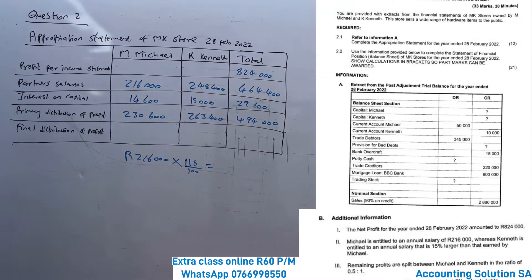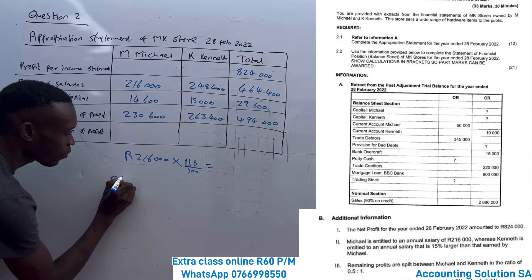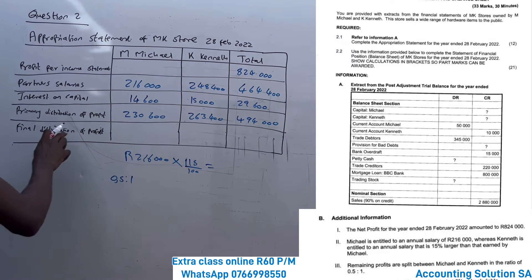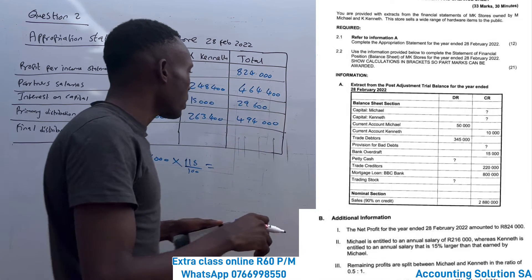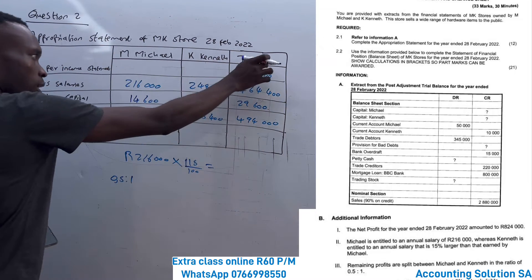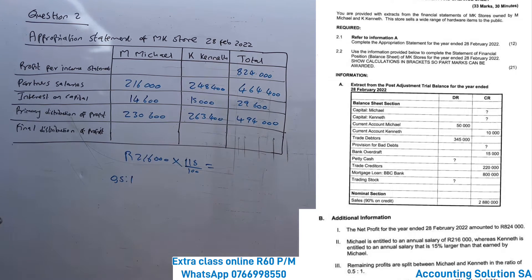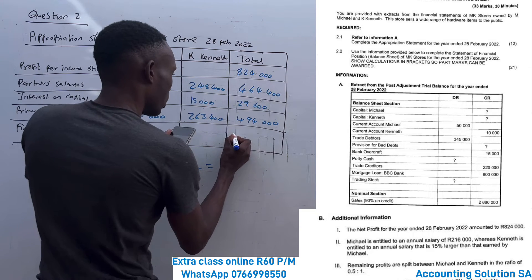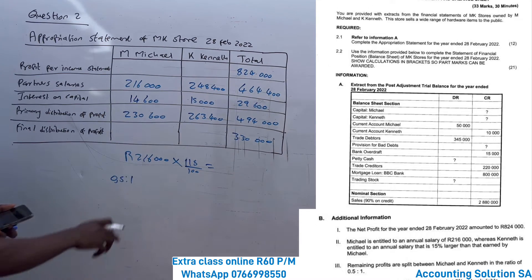Now we move to the final distribution, which uses the ratio of 0.5 to 1. The final distribution is what remains after the primary distribution is allocated. The formula is: take the total profit and subtract the primary distribution. So R824,000 minus R494,000 gives you R330,000 remaining to allocate using the ratio.